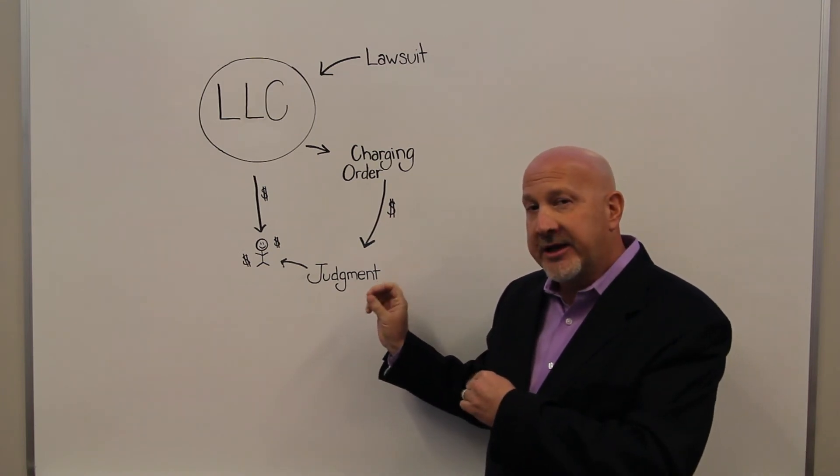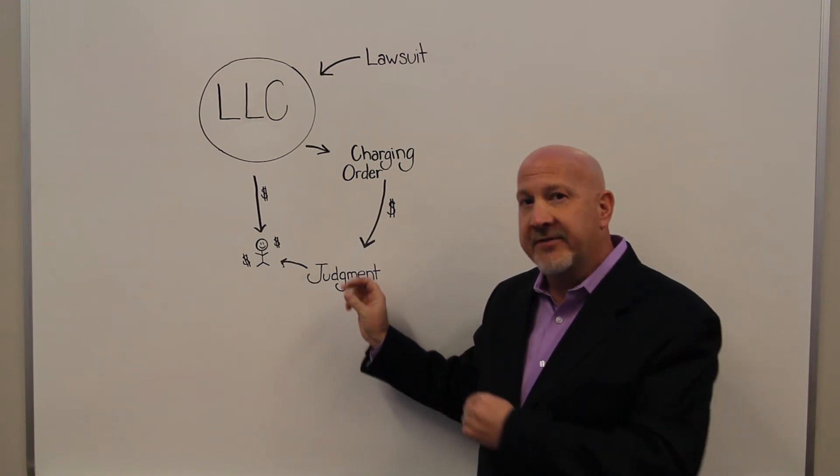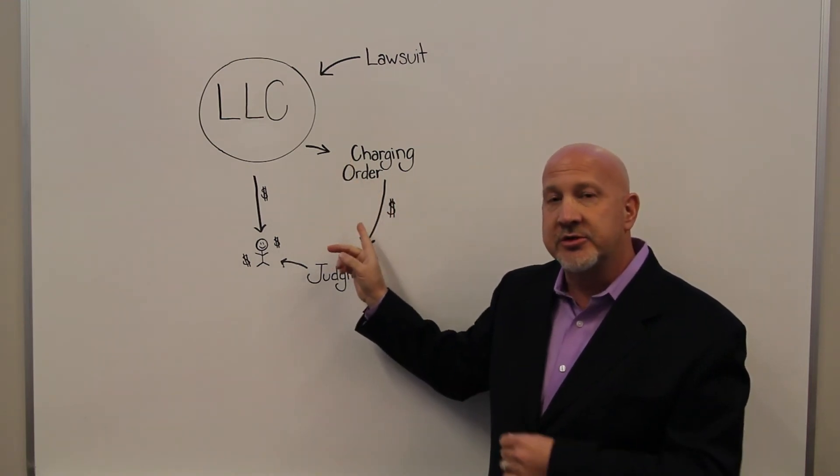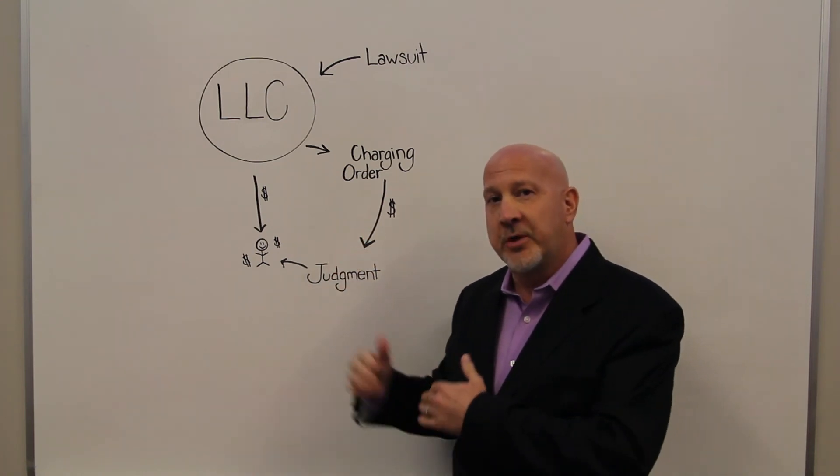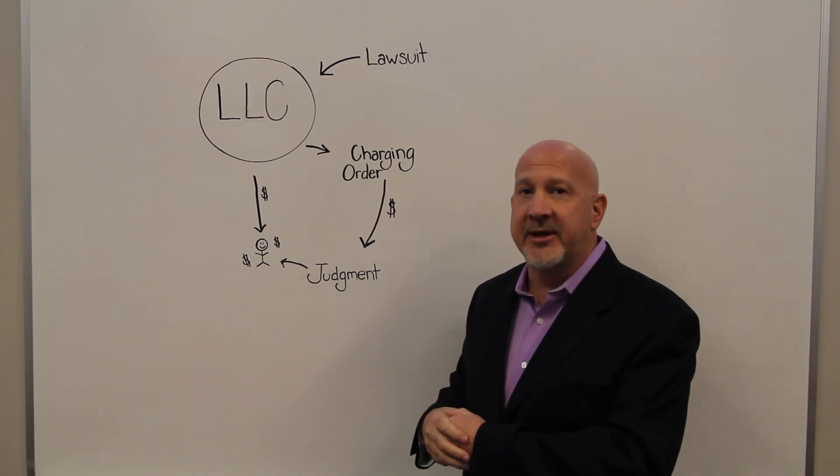But under the Nevada law, again, that's the exclusive remedy, and the judgment creditor can't force the LLC or the members to make a distribution so that they would get it. It's purely a sit and wait and hope you get something remedy, and they have to hope you're dumb enough to make that distribution.